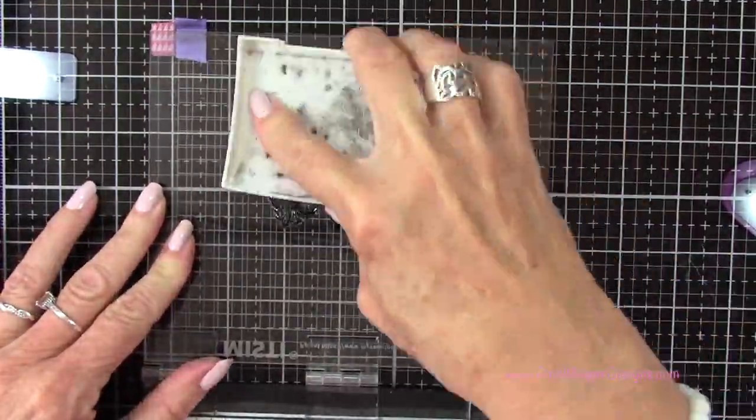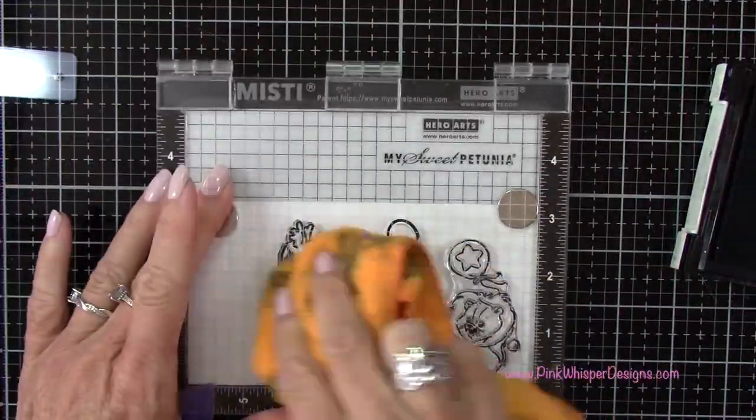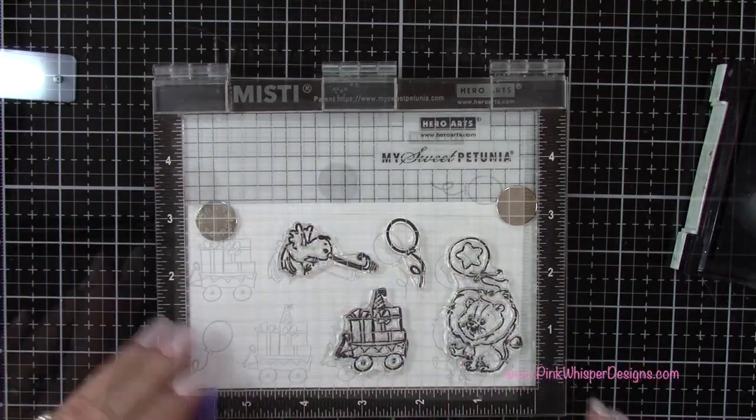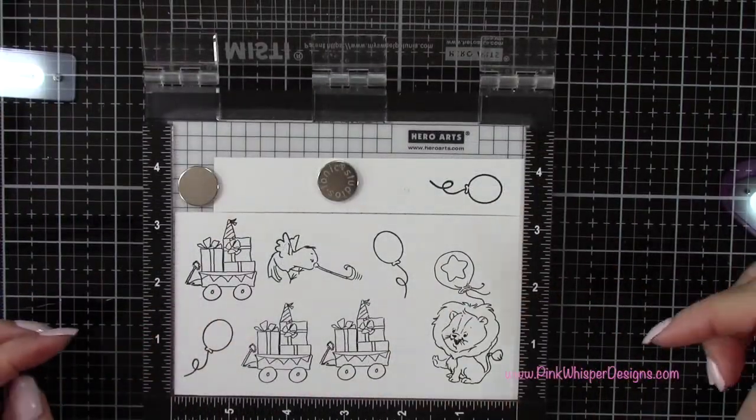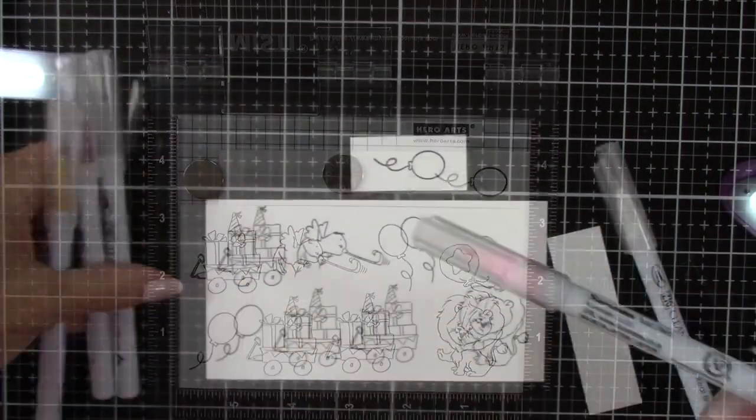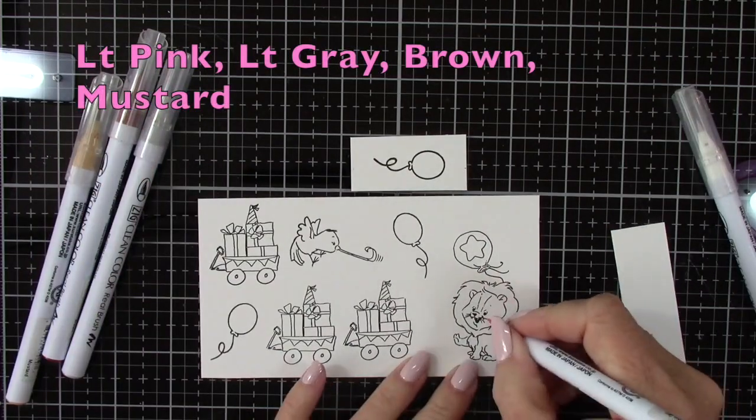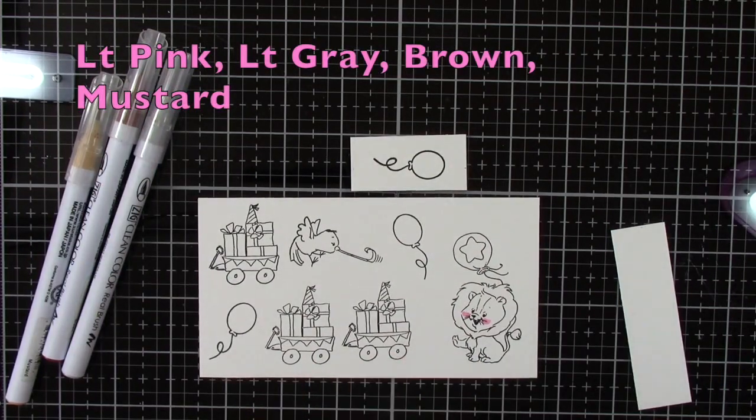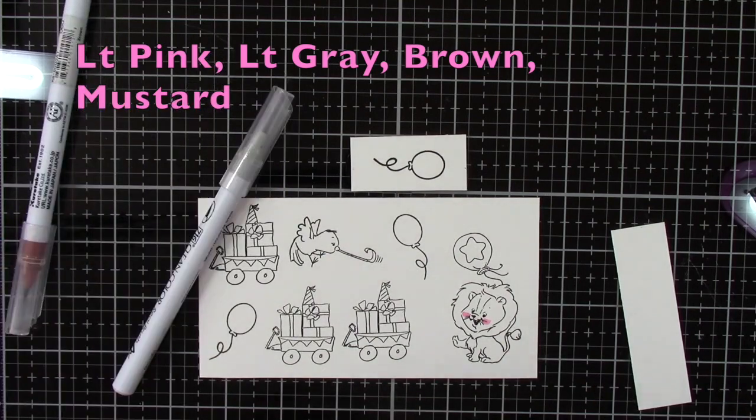On camera I'm going to stamp two more of the little wagons and then quite a few more of the little balloons. I only show you a couple here but off camera I did a few more. And you'll see that at the end of the video. So for colors I'm using light pink, light gray, brown, and mustard.